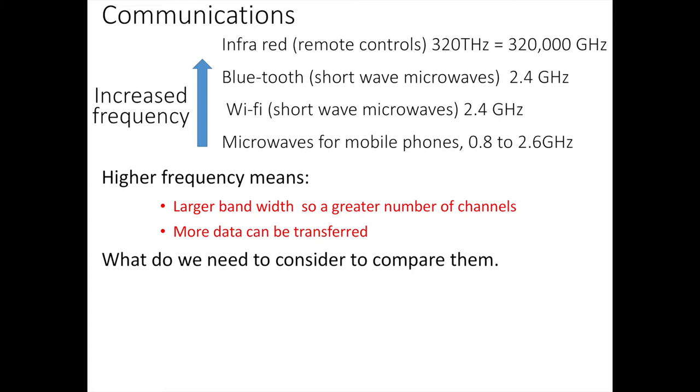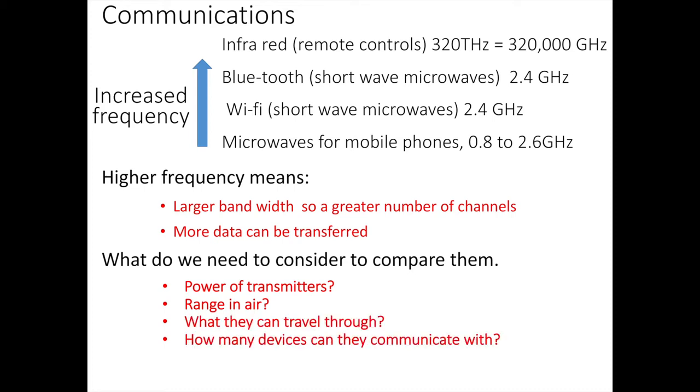So when considering each of these in exam questions you will have to compare one to the other. So we need to think about the following: What is the power of the transmitter, the amount of energy per second that they emit? What is their range in air? What can they travel through? How many devices can they communicate with? Do you need line of sight or can they pass through walls? And finally, will the weather, water or light affect them?